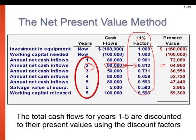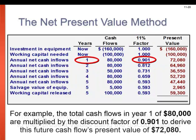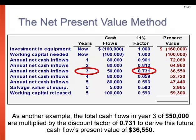There are also some videos in the supplemental resources on getting that present value. The total cash flows in year one of $80,000, multiplied by the factor, gives us a present value of $72,000. As another example, the total cash flows in year three was $50,000 because we had $80,000 coming in less the $30,000 for realigning the equipment that year. Using the factor from our table of .731, we derive this future cash flow's present value of $36,000.